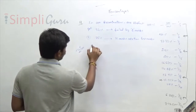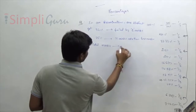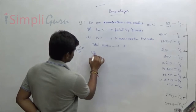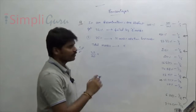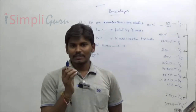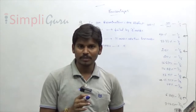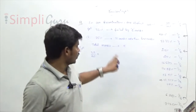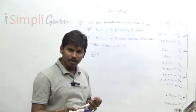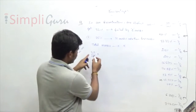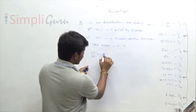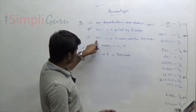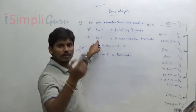Using the general method, take total marks as X. The first student got 32% of total marks and failed by 8 marks. If you add 8 marks to what he got, he will reach the pass mark. So 32% of X plus 8 equals the pass mark.